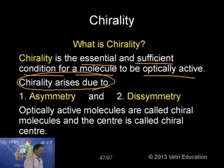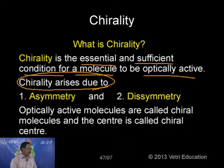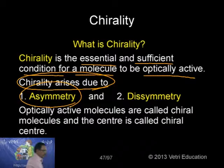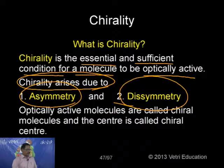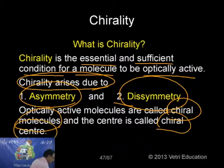What is chirality? Any molecule where there is no plane of symmetry, no center of symmetry, no axis of symmetry, and no alternate axis of symmetry - that particular molecule is said to have chirality. The molecule is called a chiral molecule and the center is called a chiral center. Optically active molecules are called chiral molecules and the center is called a chiral center.